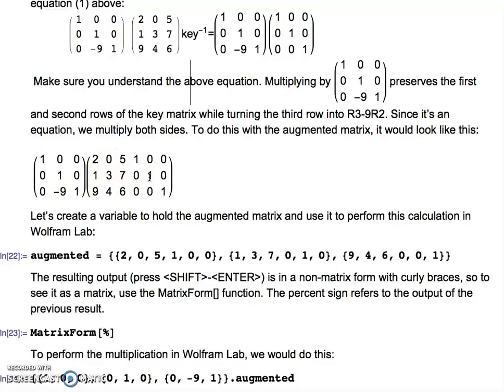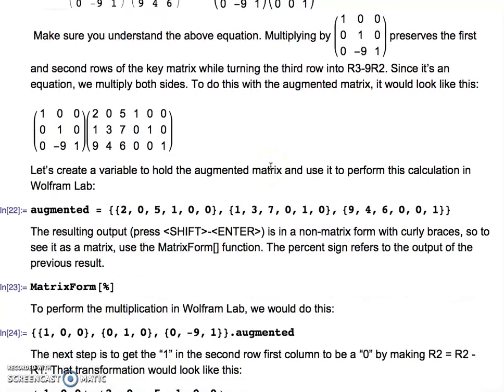Let's actually do that using the computer. First thing we're going to do is create another variable to hold the augmented matrix. I called it augmented—you can call it whatever you want, as long as you're using a lowercase letter to start. I'm saying augmented equals curly braces, enclosing the entire matrix, and my rows now are not three elements long but six elements long.